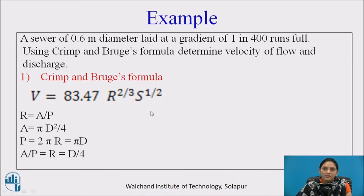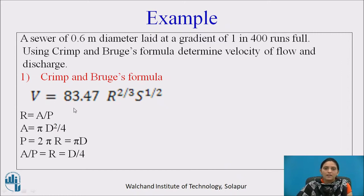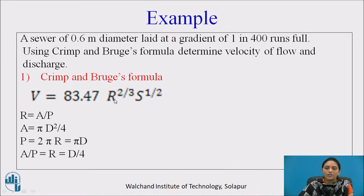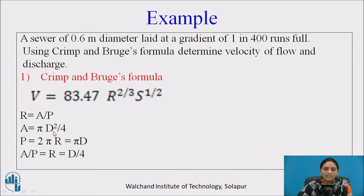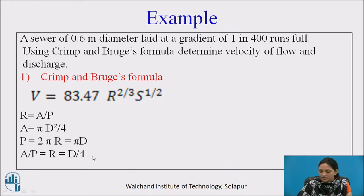Example: A sewer of 0.6 meter diameter laid at a gradient of 1 in 400 runs full. Using Crimp and Brugg's formula, determine the velocity of flow and discharge. Crimp and Brugg's formula is V = 83.47 × R^(2/3) × S^(1/2). First, find R — the hydraulic mean radius — calculated as area divided by perimeter. The sewer is circular and runs full, so area is πd²/4 and perimeter is πd. Therefore R = d/4.